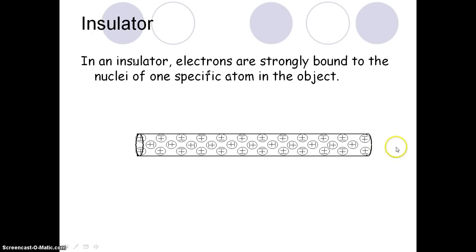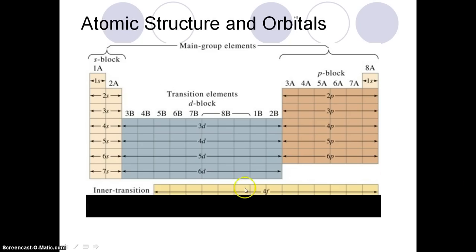This is a cross-section — we take an object and slice it, looking at the flat middle and then zooming in to make the atoms much bigger. Of course there's going to be more than one positive and more than one negative, but this is just a rough sketch. In a conductor, electrons are loosely bound to the nucleus and free to move around.